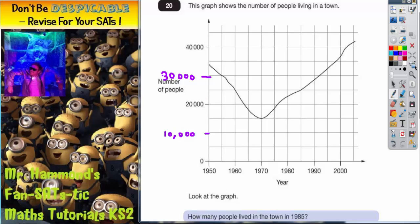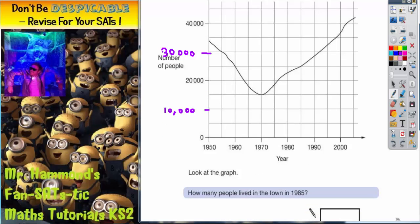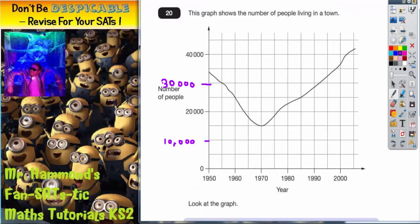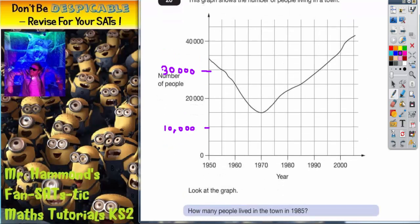Now let's scroll down and see what we've got to do. It says look at the graph. How many people lived in the town in 1985? Well, 1985 is going to be halfway between 1980 and 1990, which is here. So this line here is going to be 1985.